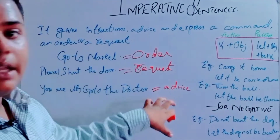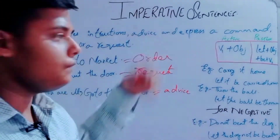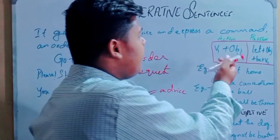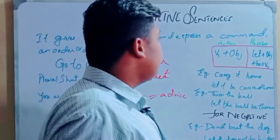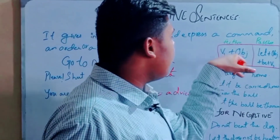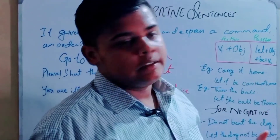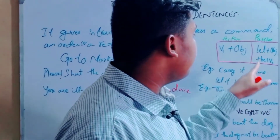These are imperative sentences. The structure for converting active to passive is: 'Let it be' followed by the object.